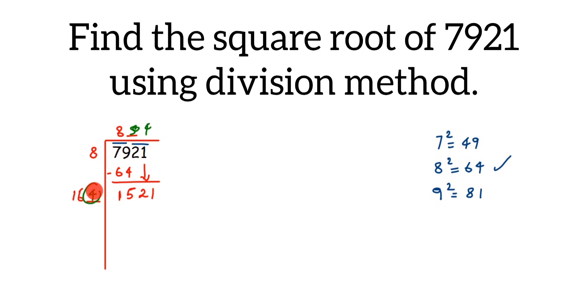So the digit here in the unit place and the next digit in the quotient should be the same. You have to find such a number that when you multiply these two, you will get equal to 1521 or less than that. You can use a trial and error method, which is time-consuming, or you can use this trick, which is very easy.